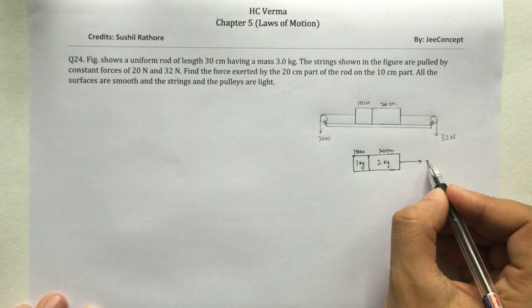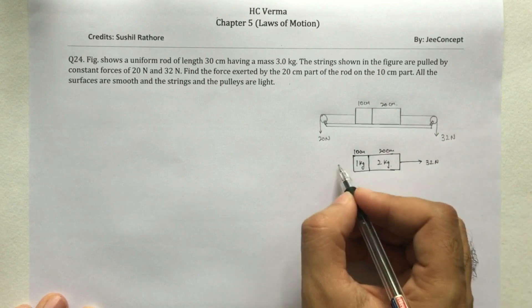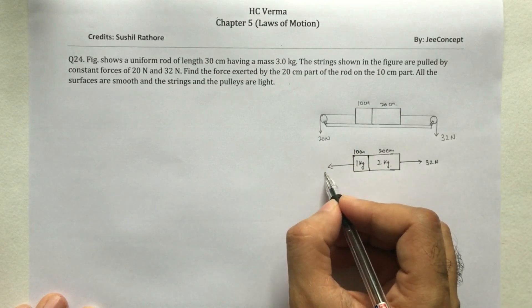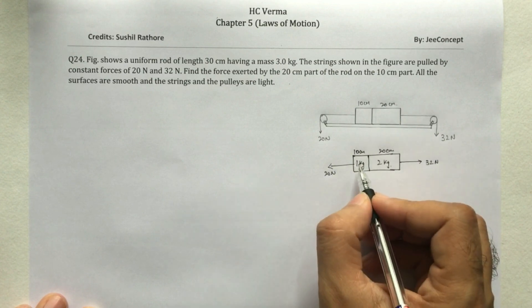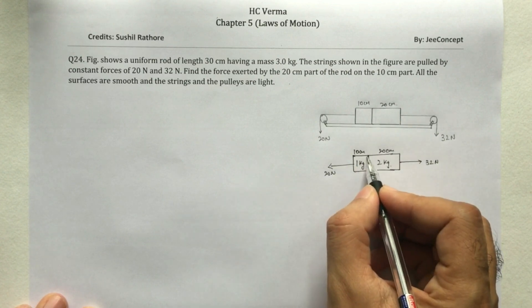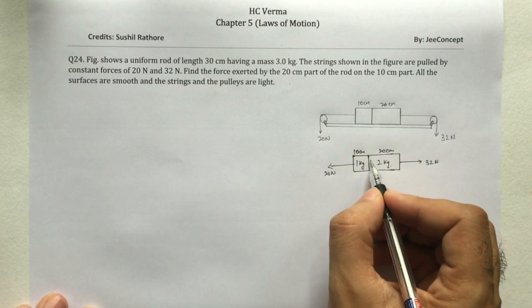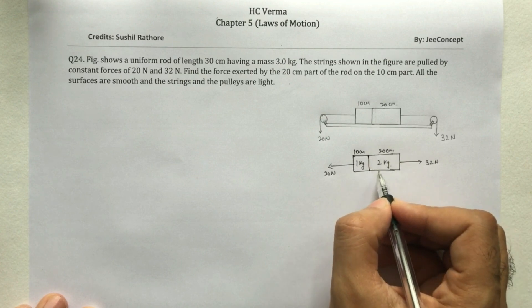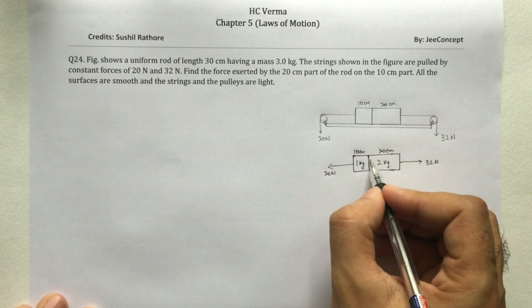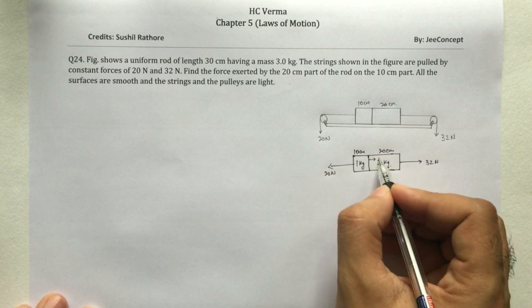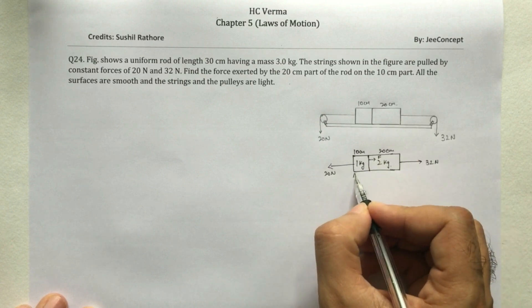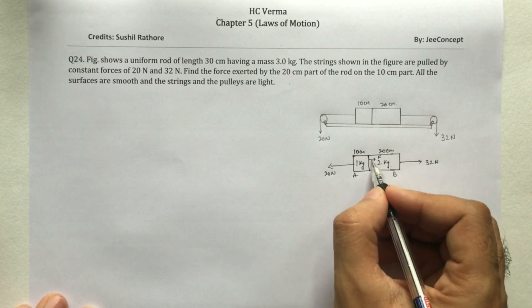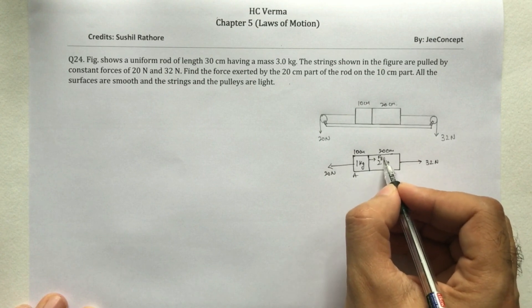When it is pulled by a 32 N force and this side with the force of 20 N, so that means this block will apply a force on this block. So this is the force, say this is A and this is B. So this is a force on B due to A.